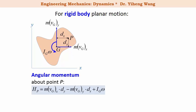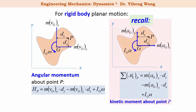This approach should look very familiar — this is what we did when we needed to find the kinetic moment about point P when learning the equations of motion for rigid body planar motion. Of special interest is the angular momentum about point G, the gravitational center, which is always Ig times omega. Ig is the mass moment of inertia of this rigid body about an axis that is perpendicular to this plane and passes through its gravitational center point G.